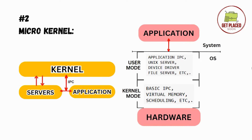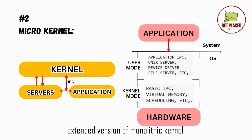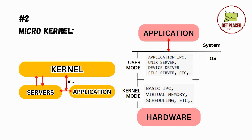Now let's look deeply at the microkernel architecture. You have the application and hardware as before. In the kernel part, the kernel is divided into two modes — user mode and kernel mode. Most servers like the unique server, file server, IPC, and device drivers are in user mode to enhance stability and security. Basic IPC, virtual memory, and scheduling are present in kernel mode. In the left-side diagram, the servers represent the user mode.